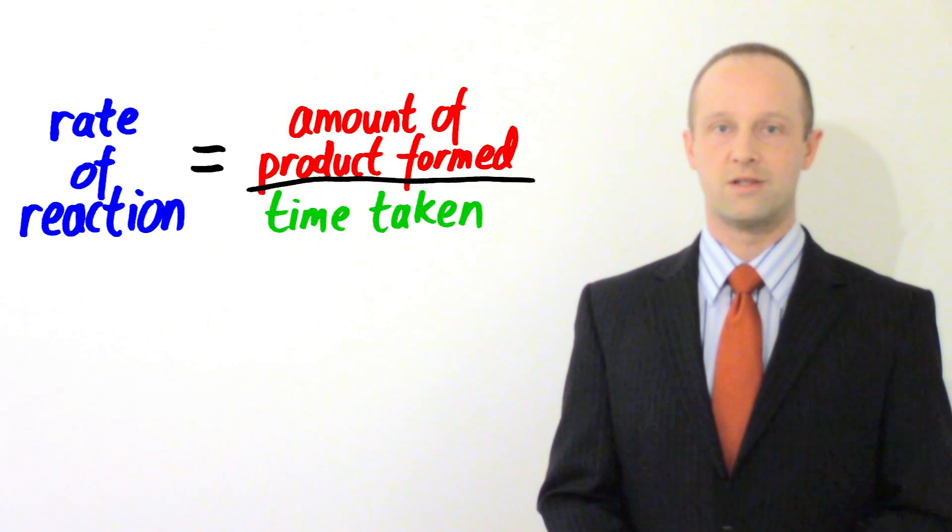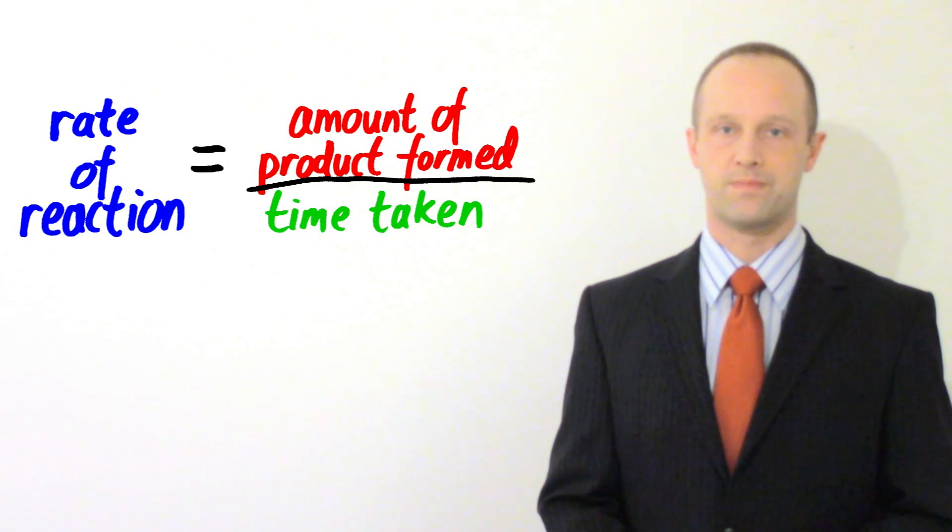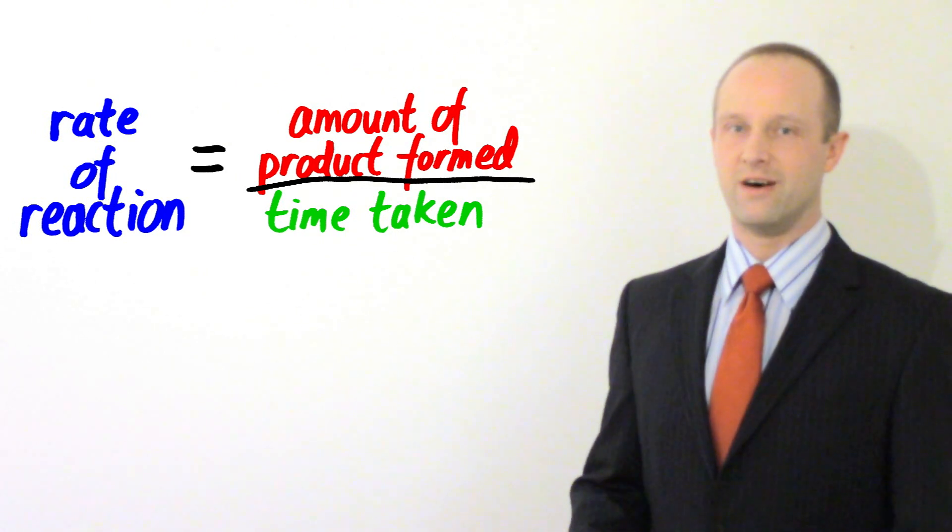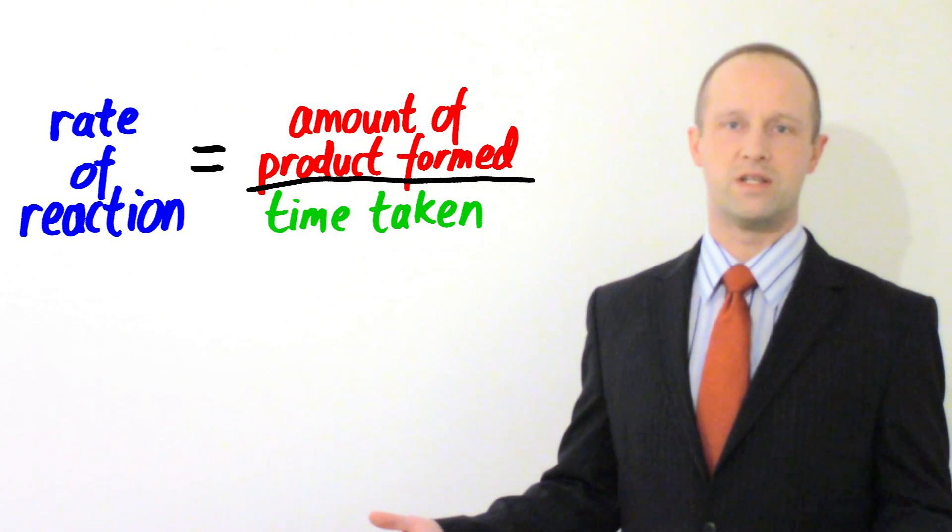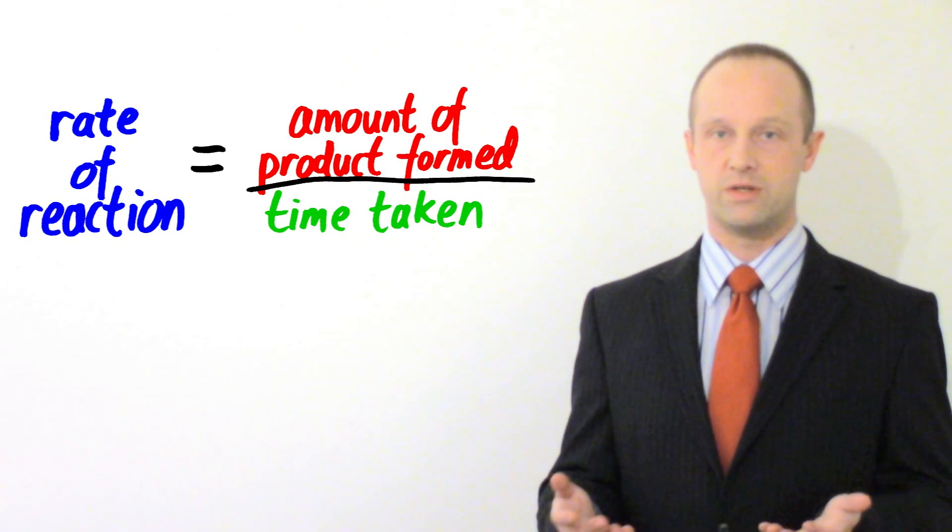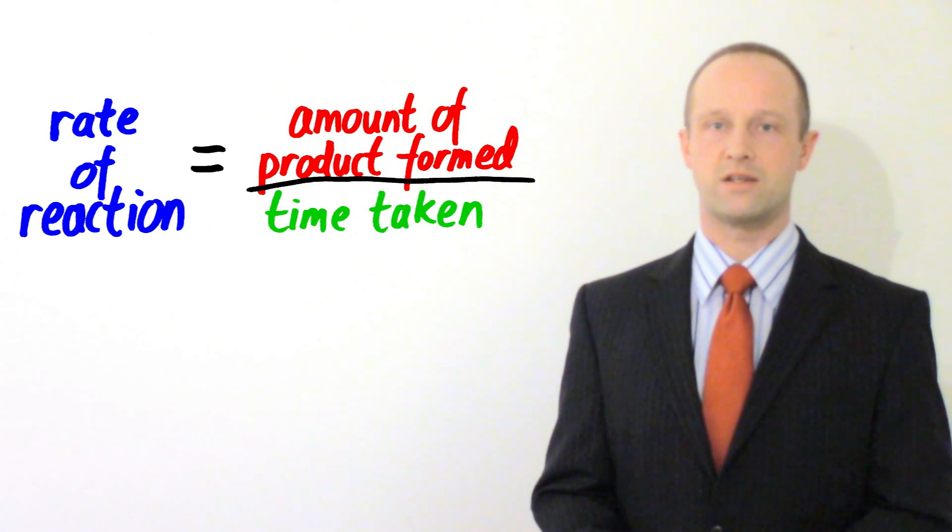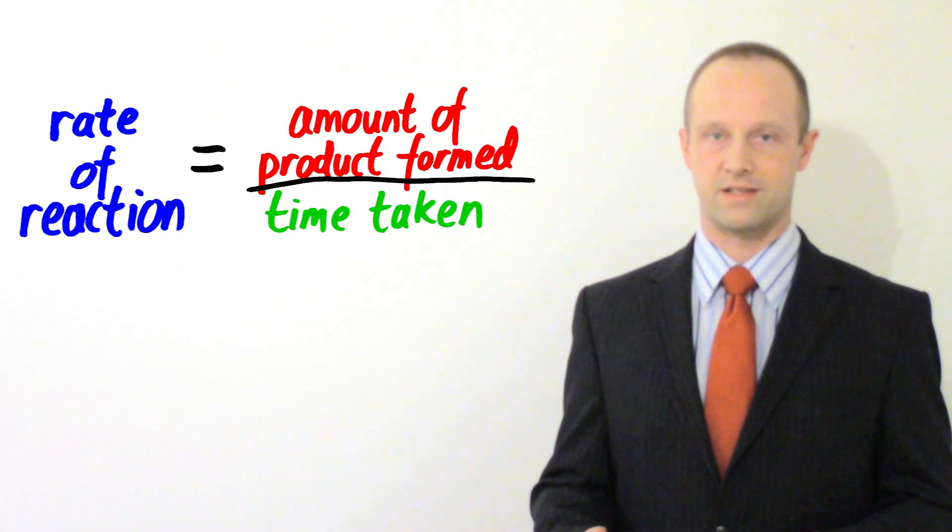Let's have a look at another example to do with the products. So let's imagine that we're reacting magnesium with hydrochloric acid, which forms hydrogen. Now with this hydrogen, unlike with our massive limestone, which you'd measure on a balance before and after, so that you could tell how much you got rid of, with hydrogen it's going to be a little bit trickier. So we might do a reaction where we collected the gas in a gas cylinder.